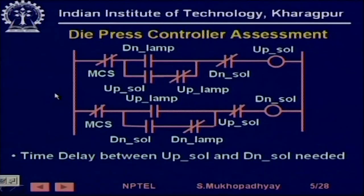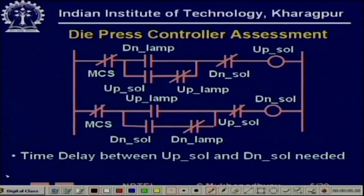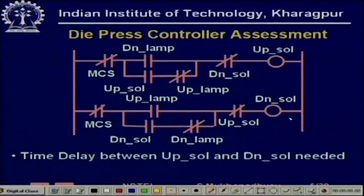We take a look at the earlier solution proposed in a previous lesson. Here we proposed an RLL program which used only normally open and normally closed contacts — real input contacts as well as some auxiliary contacts and some output coils.